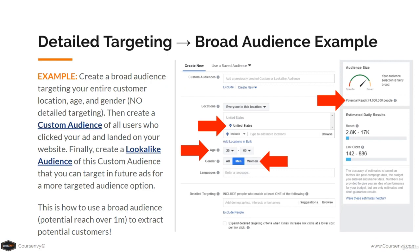Here's an example of a broad audience ad: I'll create a broad audience targeting the entire customer location, age, and gender with no detailed targeting. My potential reach is 74 million people targeting the United States, age 25 to 60, just men. Any user that clicks that traffic ad, I'll create a custom audience of those users, and then create a lookalike audience of that custom audience, so I can retarget them in future ads for a more targeted audience option.